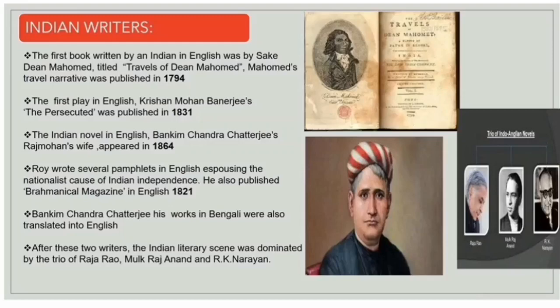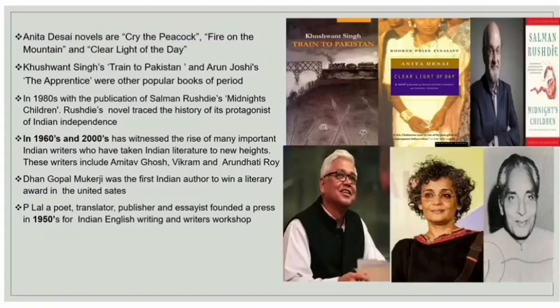After these two writers, the Indian literary scene was dominated by the trio of Raja Rao, Malkra Janand and R.K. Narayan. Anita Desai's novels include Cry the Peacock, Fire on the Mountain and Clear Light of the Day. Kushwant Singh's Train to Pakistan and Arun Joshi's The Apprentice were other popular books of the period. In the 1980s, with the publication of Salman Rushdie's Midnight's Children, Rushdie's novel traced the history of protagonists of Indian independence. The 1990s and 2000s witnessed the rise of many important Indian writers who have taken Indian literature to new heights.